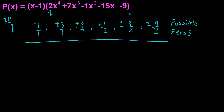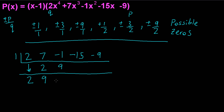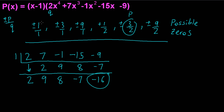I'll start with x = 1 again. Listing the coefficients 2, 7, −1, −15, and −9 and performing synthetic division, I get a non-zero remainder of −16. So x = 1 is not a root of this reduced polynomial, and we cross it off the list.